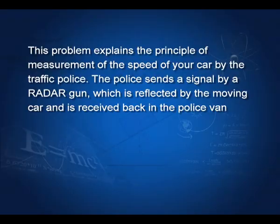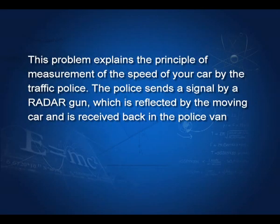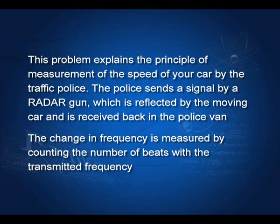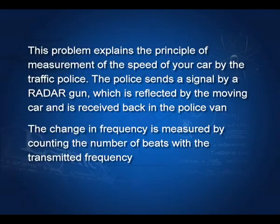This problem explains the principle behind measuring car speed with a radar gun. The traffic police send a signal to the car, it reflects off the moving car causing a frequency change. They measure the beats between the emitted and reflected frequencies, calculate the reflected frequency, and thereby determine the car's speed.